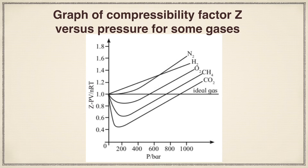From the ideal gas behavior, there are two deviations which we can see. One is a positive deviation and the other one is a negative deviation. Positive deviation is when Z is greater than 1 — that means above the ideal gas line. And below that, whatever curve you see, that is said to be negative deviation.